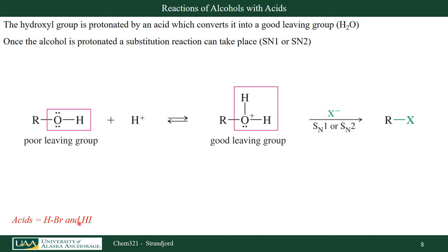If we have an alkyl halide reagent that is both an acid and a nucleophile, we can perform this reaction with just one chemical reagent. In other words, using molecules like HBr — which is acidic and a nucleophile — or HI — which is also acidic and a nucleophile. These will undergo SN1 or SN2 reactions.